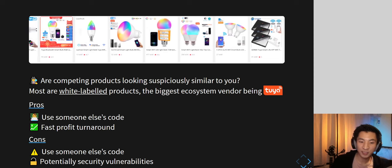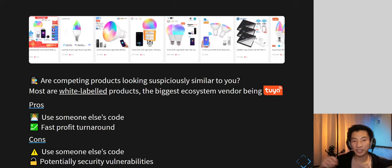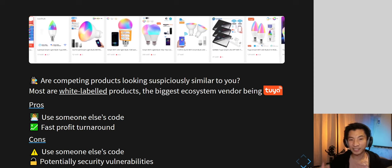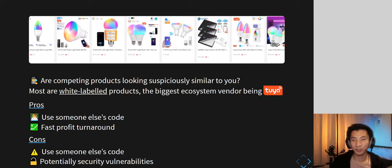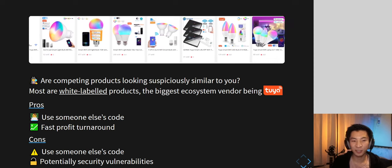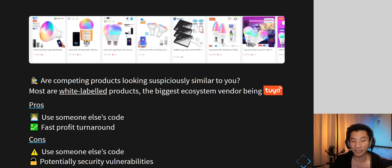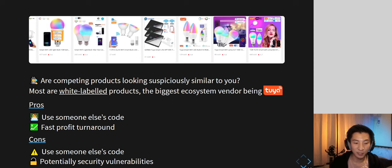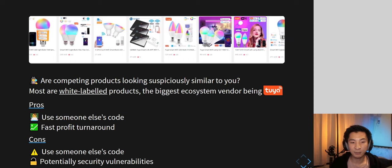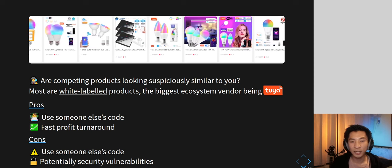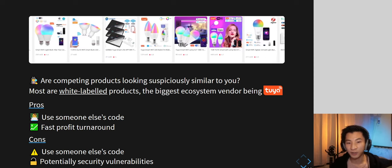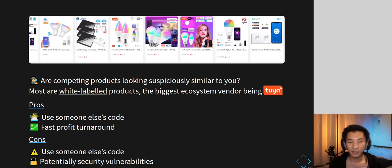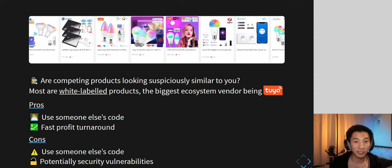A lot of these products are what we call white-label products. You buy it from someone, change the name, change the image, change the model, and sell it to the customer saying 'this is my product.' The pros are that you use someone else's code, don't have to write it yourself, and have a really fast profit turnaround — great for companies wanting to get their foot in the door quickly.